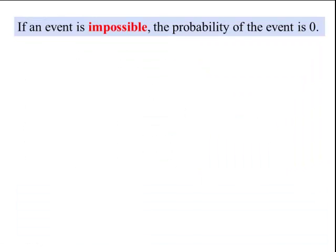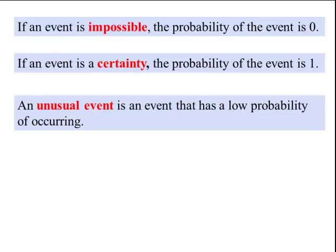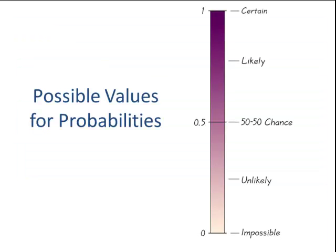If an event is impossible, it has a probability of zero. If an event is certain, the probability is equal to one. An unusual event is an event that has a low probability of occurring. For this class, we define an unusual event as any event with a probability of less than 5%. Visually: a probability of one means the event is certain to happen; as it approaches zero it becomes less likely; and a probability of zero means the event is impossible.